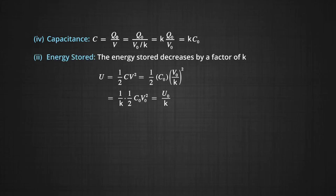Now, the energy stored. Energy stored is given by the formula half C times V squared. As C has become K times, this becomes equal to half K times C₀ times (V₀ by K) squared, that is 1 upon K times half C₀ times V₀ squared, that is 1 by K times the initial energy stored U₀. So this is U₀ by K. The energy stored decreases by a factor of K.